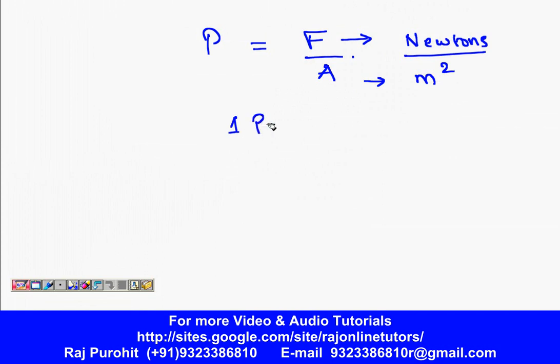The definition of 1 Pascal, PA is the symbol of Pascal. It is equal to 1 Newton upon 1 meter square. When a force of 1 Newton acts over an area of 1 meter square, the pressure acting is said to be 1 Pascal.